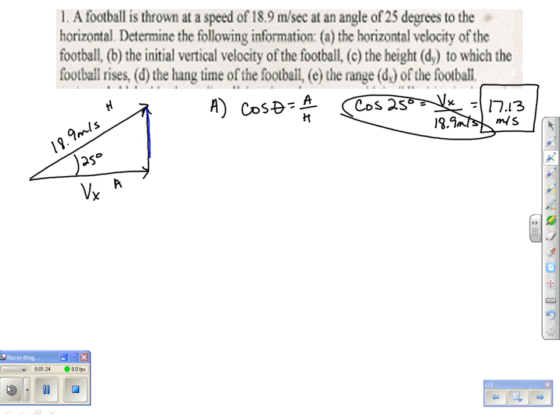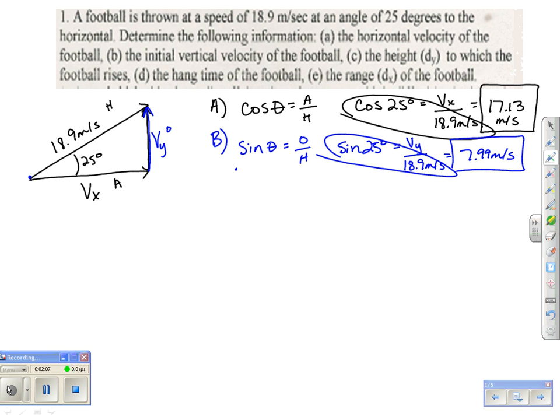My second question wants me to find my initial vertical velocity. Really what it wants me to find is my Vy, because that's going to be the speed at the beginning going up and right at the end when it finishes. So for B, this is the opposite side. So since it's opposite, I'm going to use sine theta equals opposite over hypotenuse. The sine of 25 degrees equals my Vy over my 18.9 meters per second. Again, I'm going to cross multiply to solve for my Vy, which will give me an answer of 7.99 meters per second. That's all the first two questions they wanted me to find.